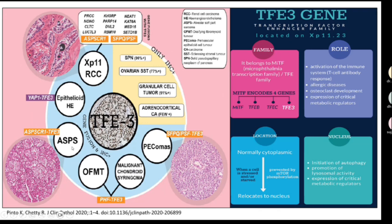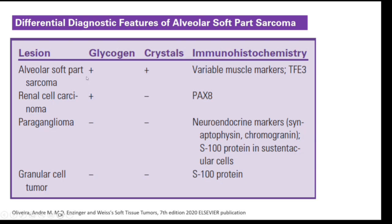Tumors associated with TFE3 translocation include: alveolar soft part sarcoma, PEComas, epithelioid hemangioendotheliomas, RCCs, ossifying fibromyxoid tumor, and malignant chondroid syringoma. These will be IHC positive due to translocation. However, there are other tumors with no TFE3 translocation that are still TFE3 positive: pseudopapillary neoplasm of pancreas, ovarian sclerosing stromal tumor, granular cell tumor, and adrenocortical carcinomas.